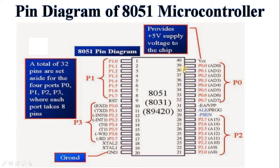Port 3.0, pin number 10, acts as serial input data (RXD - receive data). Port 3.1 is serial output data (TXD - transmit data). Port 3.2 acts as external interrupt 0 input. Port 3.3 is external interrupt 1 input. Port 3.4 is external timer 0 input. Port 3.5 is external timer 1 input. Port 3.6 is external memory write signal. Port 3.7 is external memory read signal.